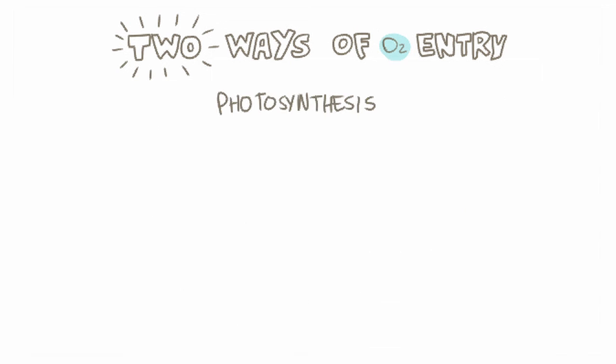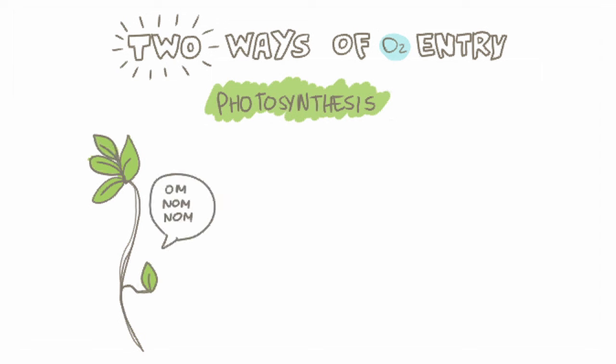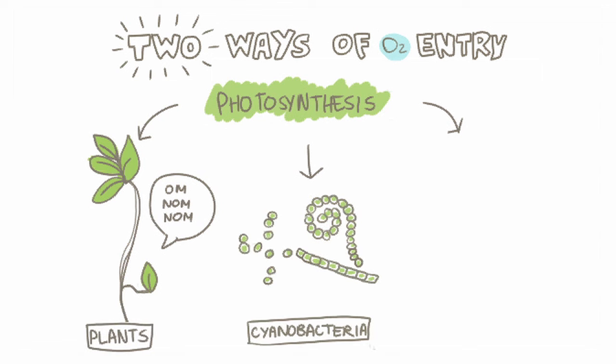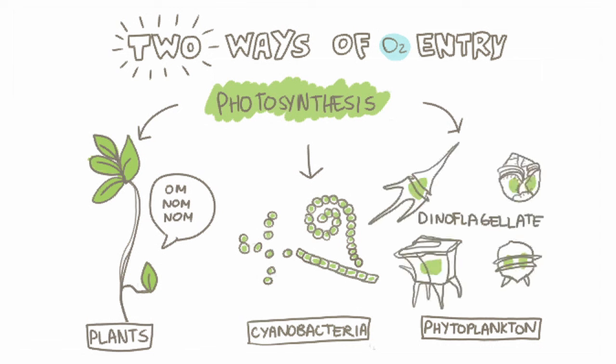Even more oxygen enters water through photosynthesis. You probably know photosynthesis mainly as the way that plants around us feed themselves. But there's actually a whole slew of other photosynthetic living things aside from plants. From tiny green bacteria called cyanobacteria, to little phytoplankton with crazy names like dinoflagellate and even crazier bodies.